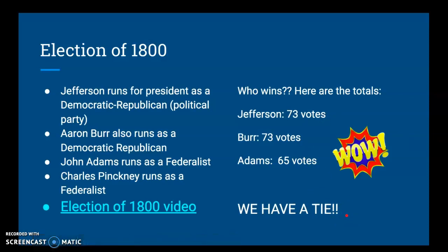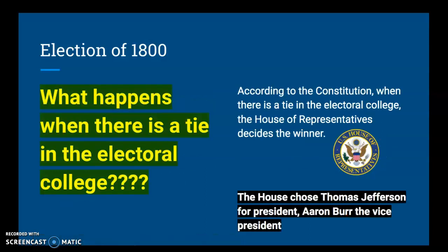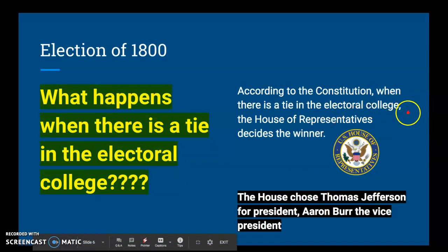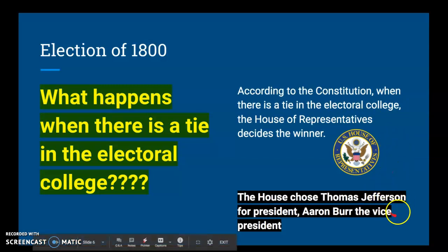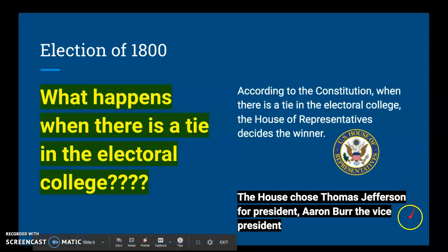Constitutional scholars from the civics unit ought to know this: according to the Constitution, when there's a tie in the Electoral College, the House of Representatives decides the winner. The House chose Thomas Jefferson for president and Aaron Burr for vice president. There's a little bit of an extra story here, but we'll save that for another day.